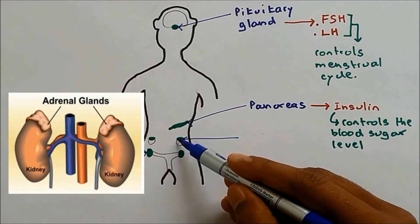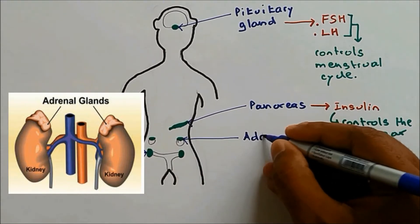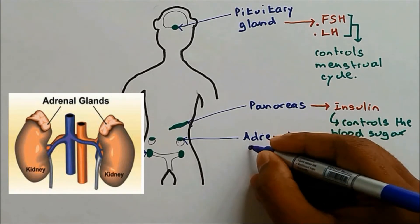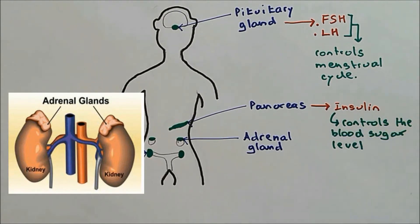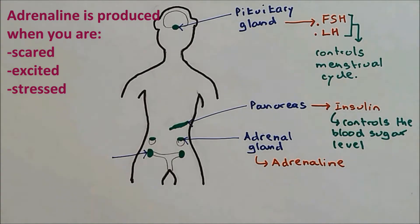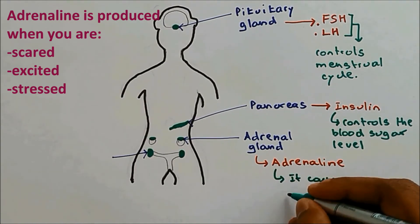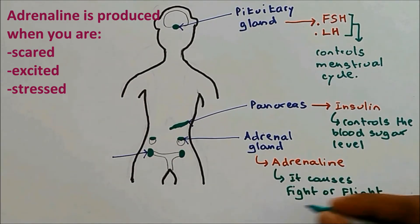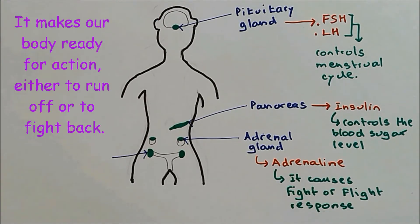This gland, found above the kidney, is called the adrenal gland. You don't need to learn the name of the adrenal gland, but you do need to learn the hormone it produces, which is adrenaline. Adrenaline causes the fight-or-flight response, which means it makes us ready to fight or run away when we encounter a stressful situation.